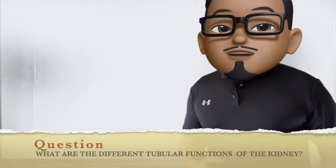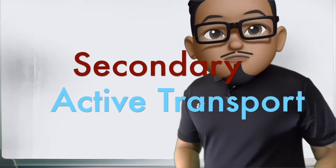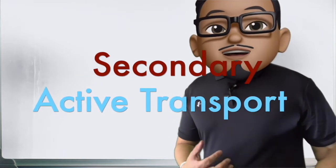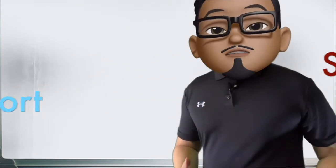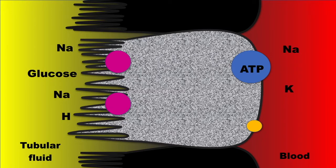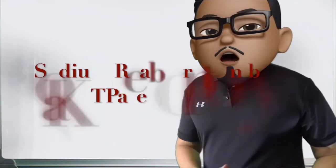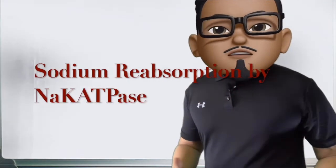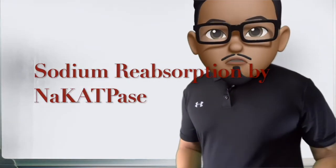Most of the handling of solutes in the kidney uses secondary active transport, taking advantage of the sodium gradient established by the ATP-driven pumping of sodium out of the cell in exchange for potassium. This is the initial step of most, if not all, tubular functions.